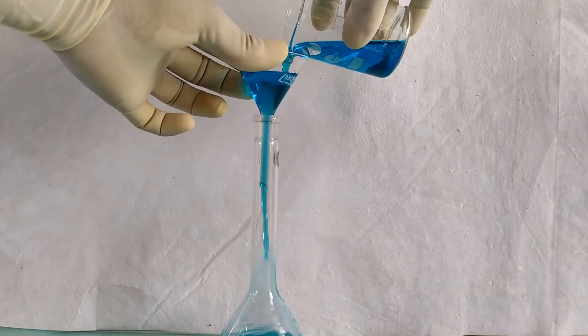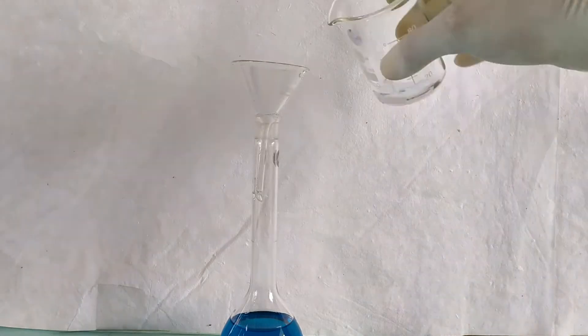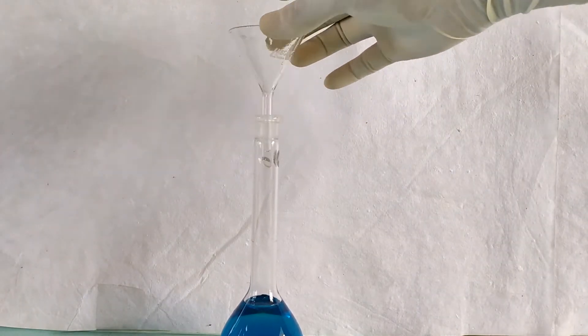Transfer the solution into a volumetric flask. Rinse the funnel, the beaker and the stirring rod using small amounts of distilled water. Make sure that the final volume after the rinsing process does not cross 100 ml.